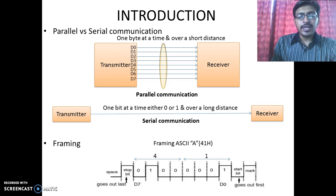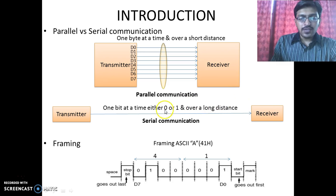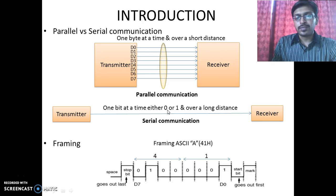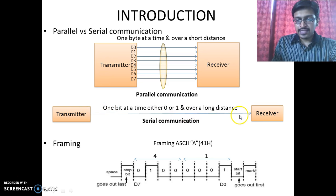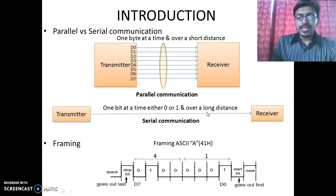So serial communication is used to transmit data over a long distance. In case of serial communication, the data is transmitted one bit at a time, in terms of either zero or one. So it is difficult to make sense of data unless the sender and receiver are agreed upon some set of rules on how to package the data, and this is known as framing.